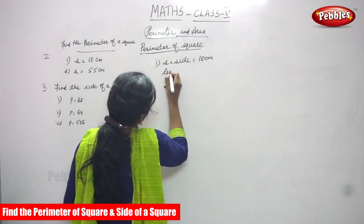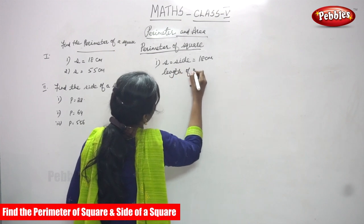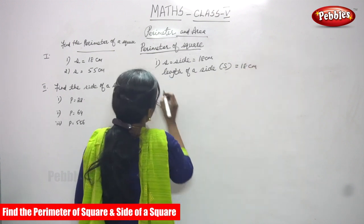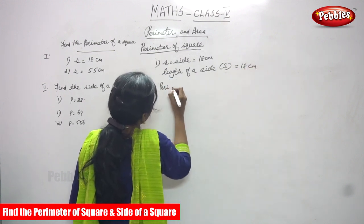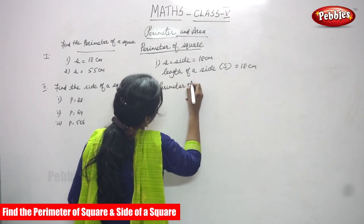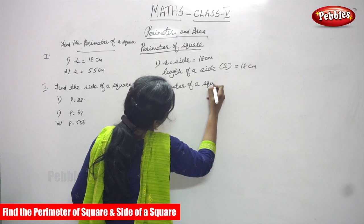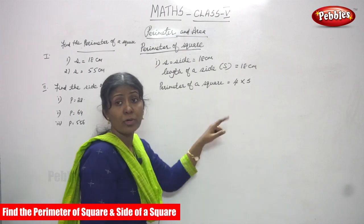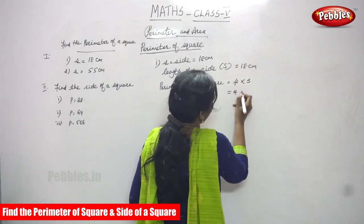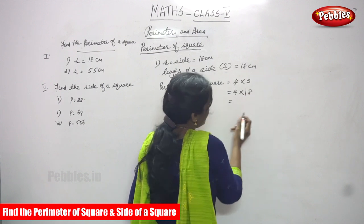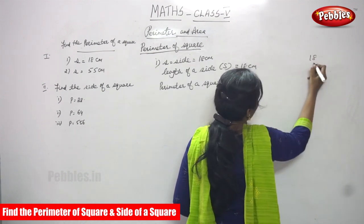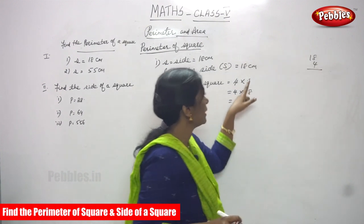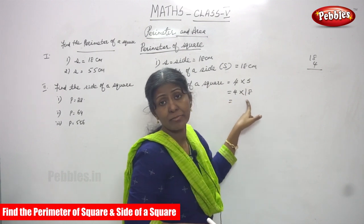You can write like this: length of a side, that means S, is equal to 18 cm. Now they are asking the perimeter of a square. Perimeter of a square is equal to the formula: 4 into length of the side. That means 4 into S. So substitute the value of side: length of a side is equal to 18, so in the formula, in the place of side, I have written 18 cm.